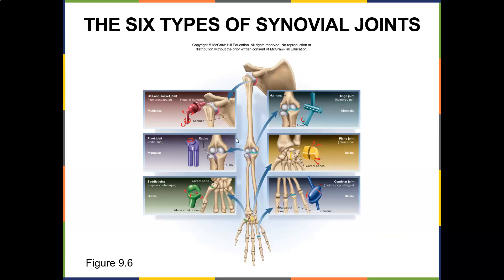There are six types of synovial joints. The ball-and-socket is your shoulder. The pivot joint is the radius and ulna. The saddle joint is your thumb. The condylor joint involves your metacarpals. The plane joint involves your intercarpals. And the hinge is your elbow — the humerus with the radius and ulna.